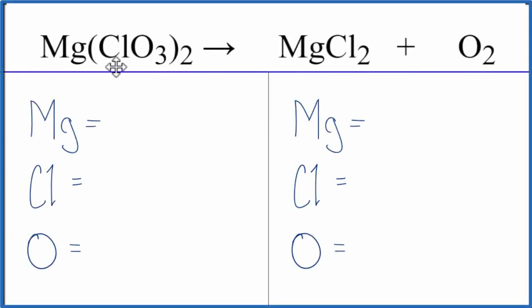In this equation, we have magnesium chlorate decomposing into magnesium chloride and oxygen gas. Let's add the atoms up on each side of the equation and then balance it.